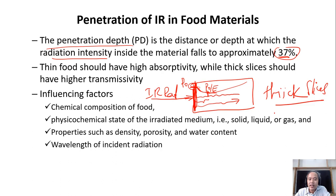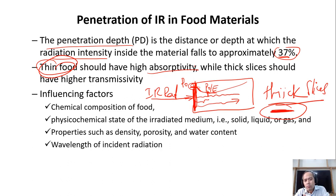Penetration depth is important. Thick food should have high transmissivity — meaning the radiation can penetrate higher into the center — while thin food should have high absorptivity to efficiently convert radiation to heat. Influencing factors on penetration depth include the composition of the food, the physical and chemical state of the irradiated medium (solid, liquid, or vapor), the properties of food like density, porosity, and water content, and the wavelength of the incident radiation.